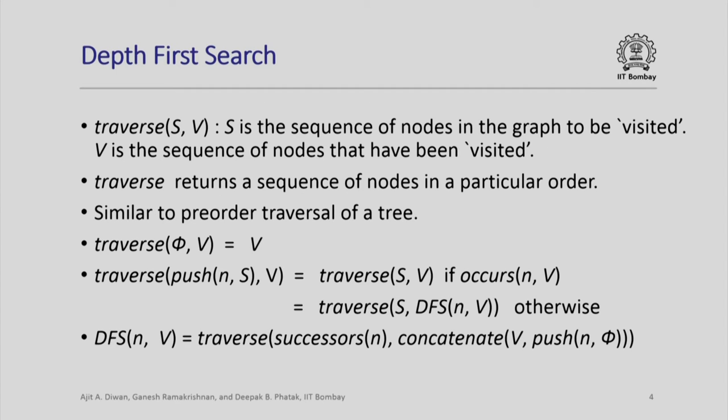So what is depth-first search? We define a function called traverse(s, v), where s is a sequence of nodes in the graph yet to be visited and v is a sequence of nodes that have already been visited. Traverse will finally return a sequence of all nodes that get visited, in the order in which they are visited during our traversal. This is similar to the pre-order traversal of a tree, which generates a sequence of all nodes in a particular order. Similarly, depth-first search generates a sequence of all nodes in the graph in a particular order.